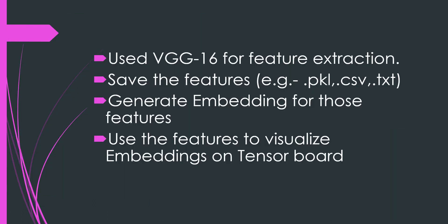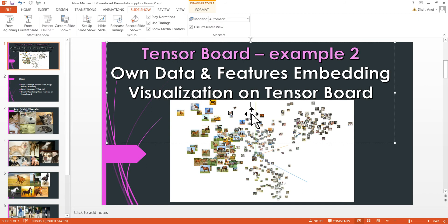Once you have your data, you use a feature extractor — you can use any neural network model. I am using VGG16 to get those features. Then you can save those features in any format like .pkl, .csv, or .txt, and then we generate embeddings for those features and visualize them.